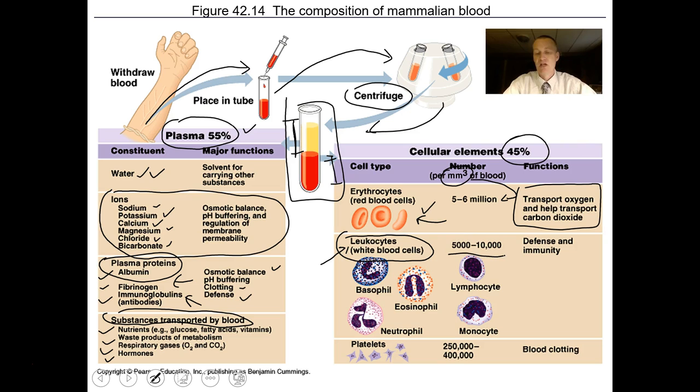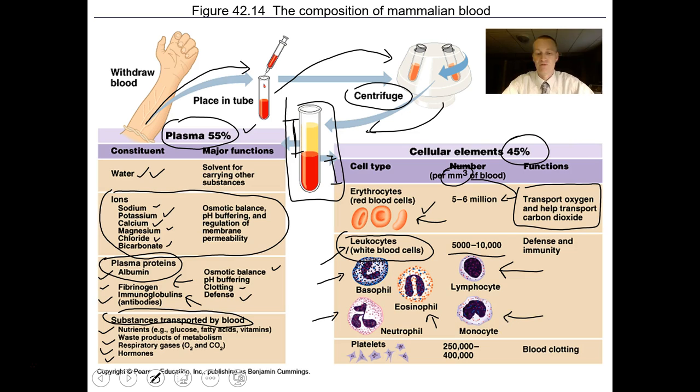Some white blood cells like eosinophils help fight parasitic infections such as worm infections. Basophils are responsible for allergic reactions and swelling. Neutrophils help fight bacteria. Lymphocytes have different jobs — producing antibodies and fighting cancer. Monocytes fight bacterial infections and gobble up cellular debris. We also have a lot of platelets in a cubic millimeter of blood, and these help in blood clotting.